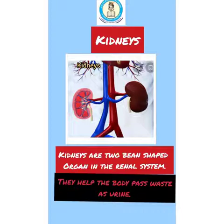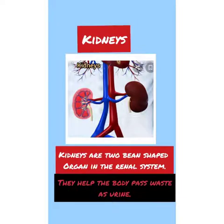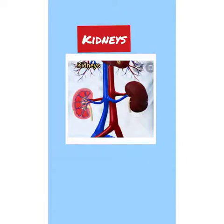Now we discuss another part of internal organs — the kidney. Kidneys are two bean-shaped organs in the renal system. They help the body pass waste as urine.